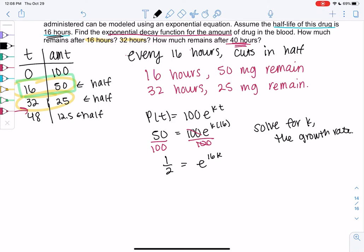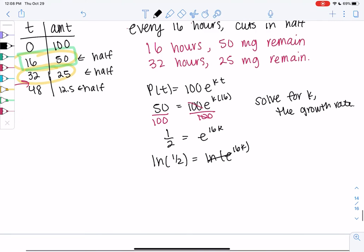And so if we want to solve for k, we just take ln of both sides. ln of 1 half equals ln of e to the 16k. ln and e cancel out. So ln of 1 half equals 16k. If you Google half-life, you will find formulas, but the formulas are confusing if you don't understand what's going on. So I really think it's easier to just set up a table and solve for k, because then you're actually going to understand what's happening, rather than just mindlessly plugging into formulas.